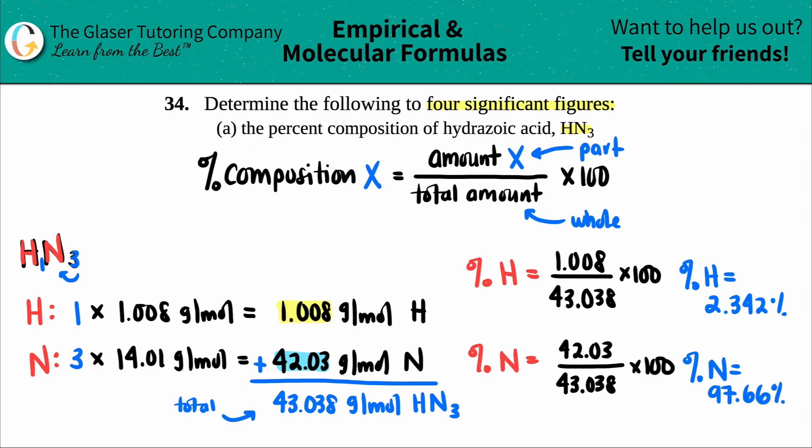And there you go. Yep, that makes about sense. 2.342 plus 97.66. Yep, you get roughly 100% when you add those two up. So there you go.